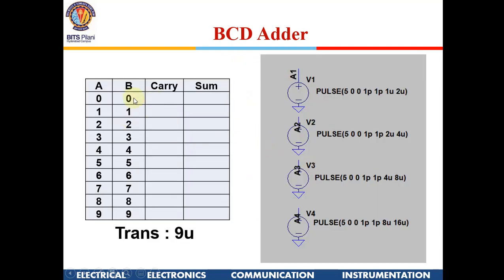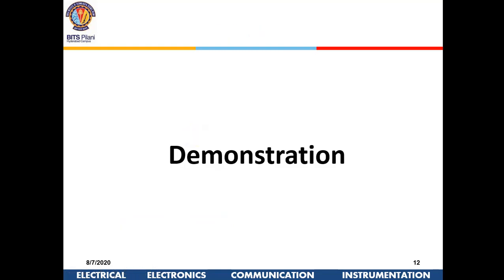For the BCD simulation, give inputs only from 0 to 9 using the same pulse train and stop the simulation at 9 microseconds. Using the same values for A and B, results will be: sum 0, 2, 4, 6, 8, then carry=1 with sum 1 (i.e., 11), carry=1 with sum 2 (12), and so on up to carry=1 with sum 8 (18). You can also give other combinations, but this one set of test vectors should be verified.